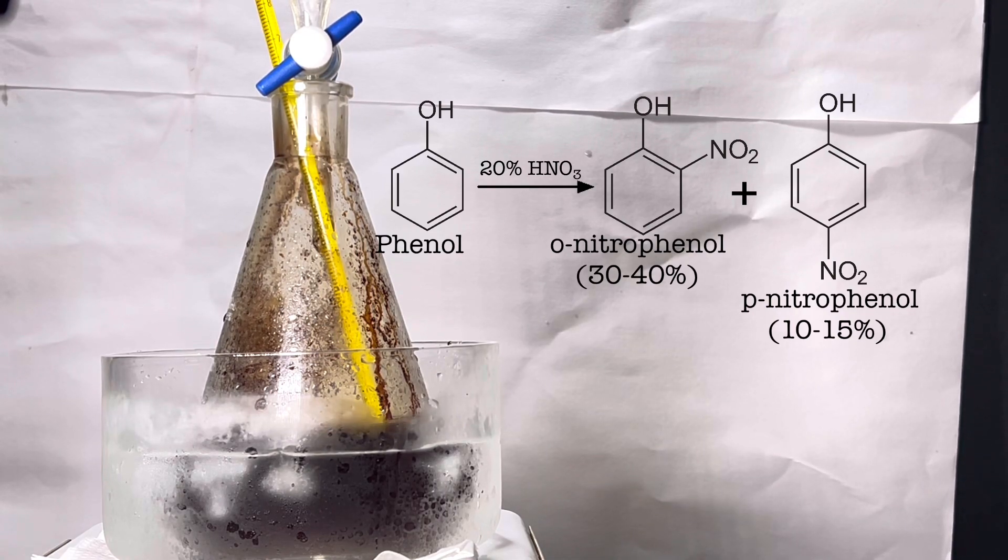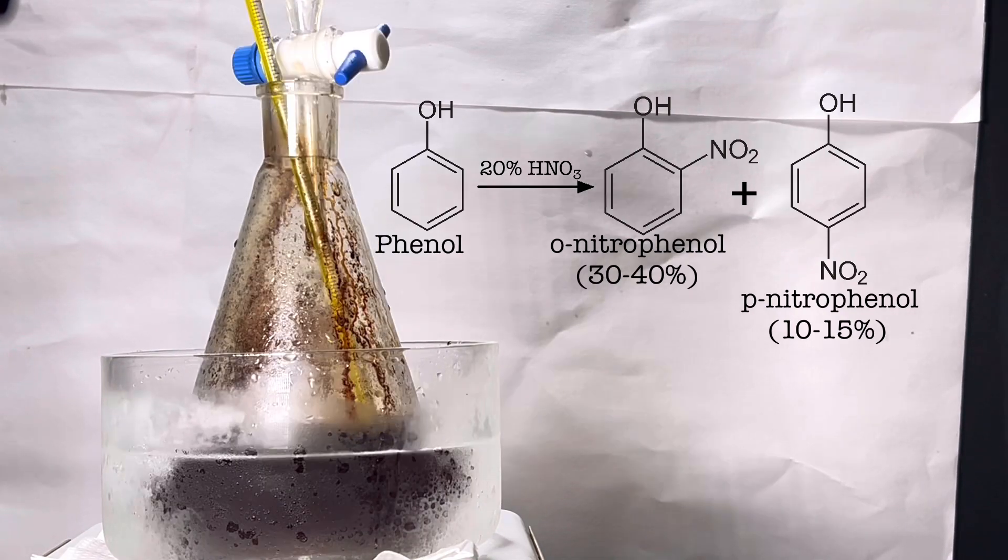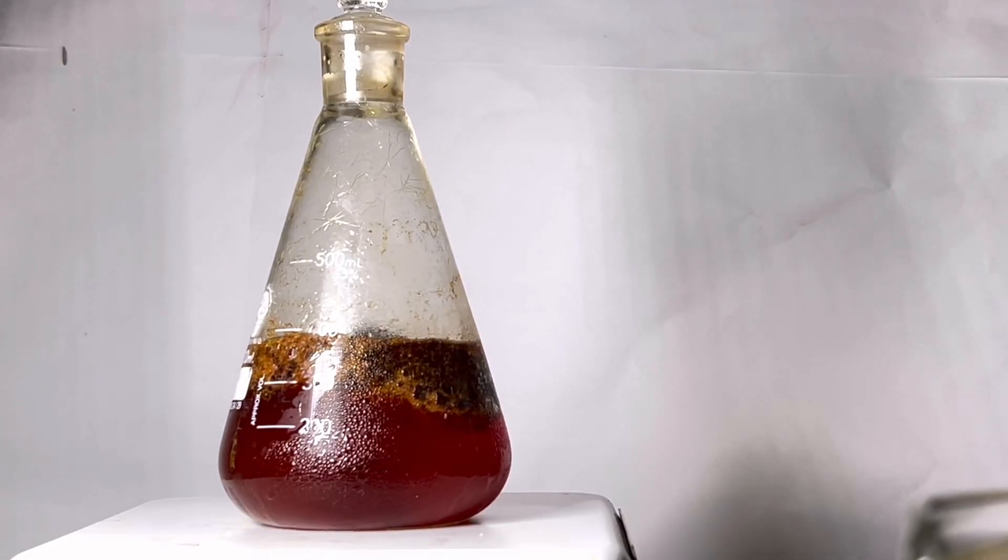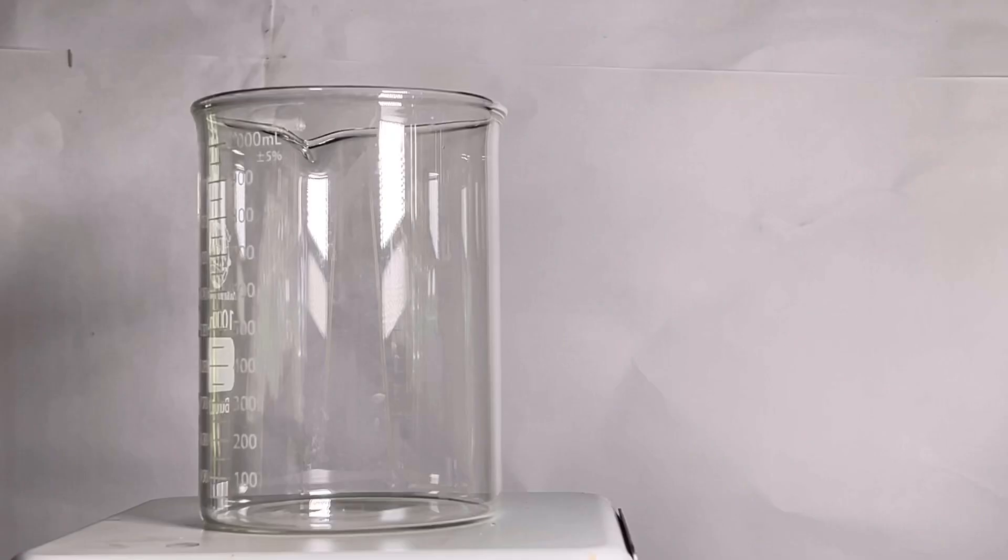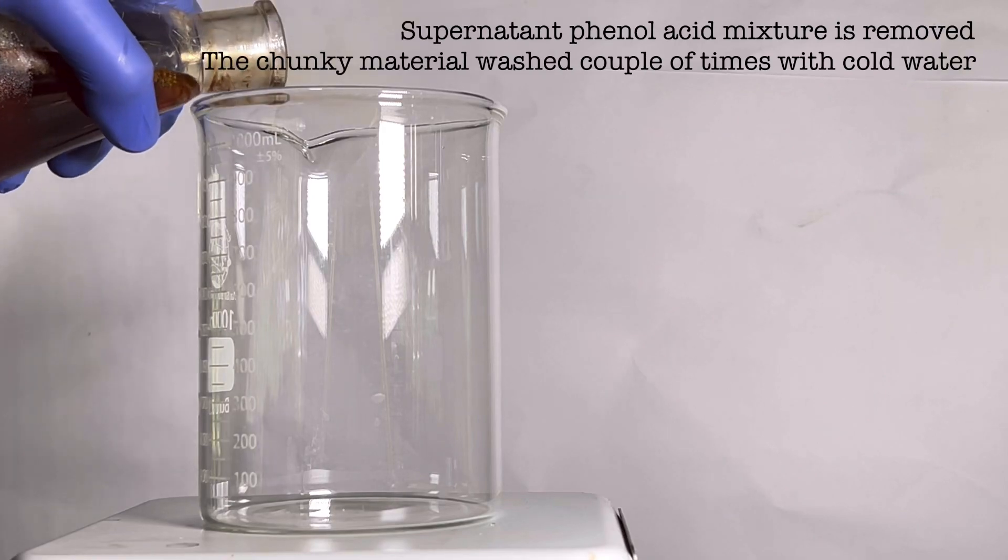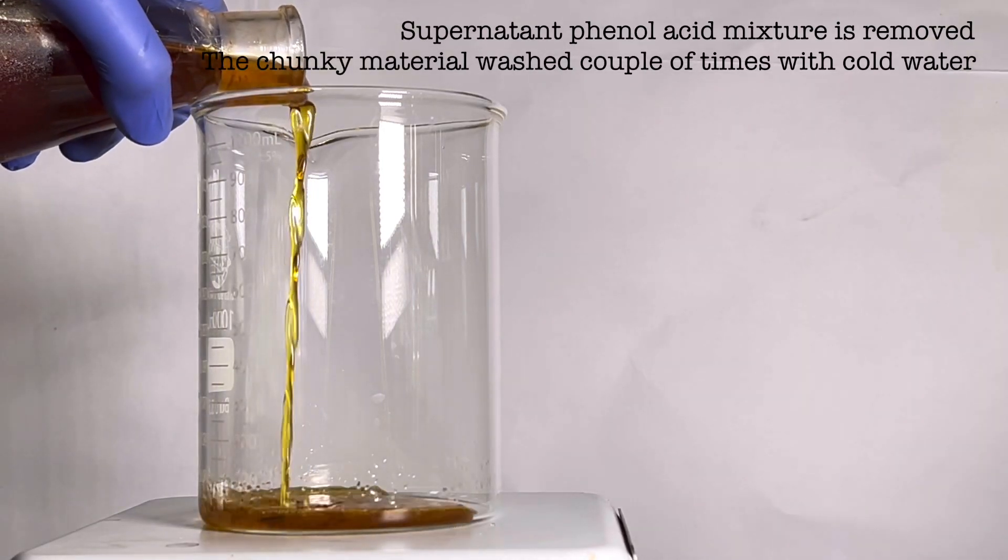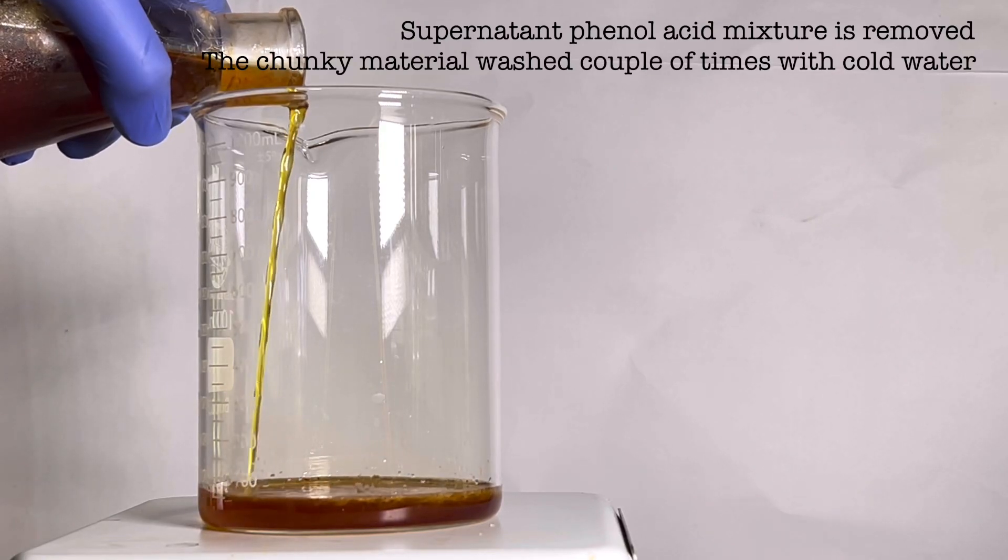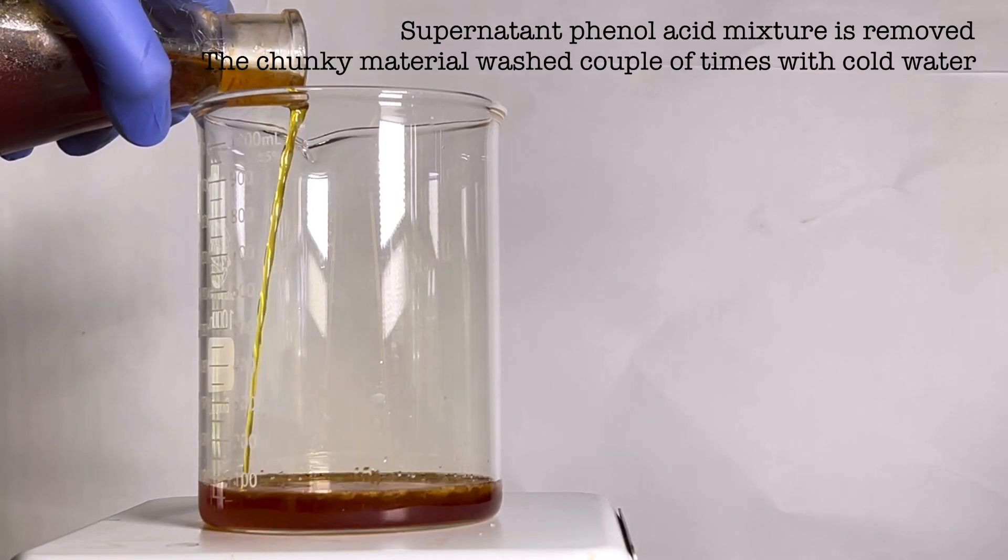After all the phenol has been added, allow the mixture to stand for one hour with continuous stirring. After one hour we have this deep red colored solution with black colored chunky tar-like material. The mother liquor is drained into a separate beaker. It contains all the unreacted phenol and acid. This mixture is extremely hazardous to health and should be properly disposed.